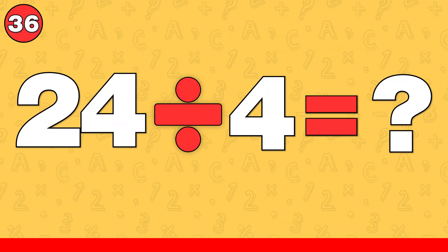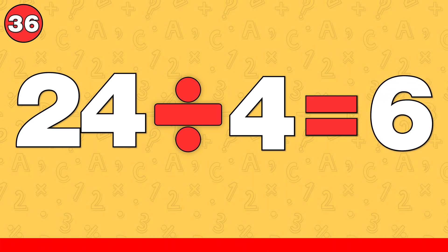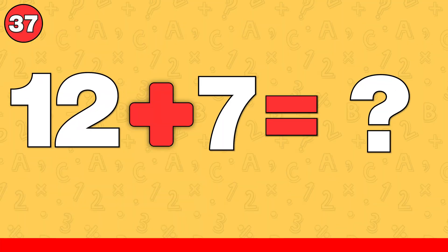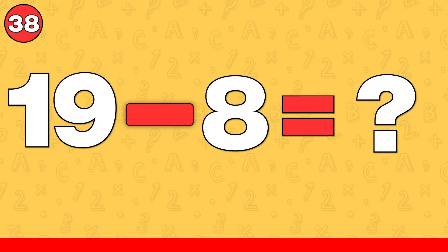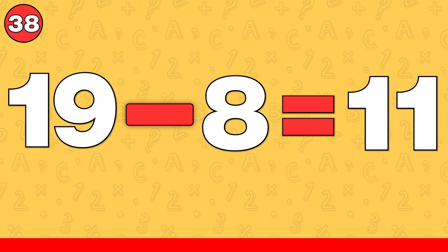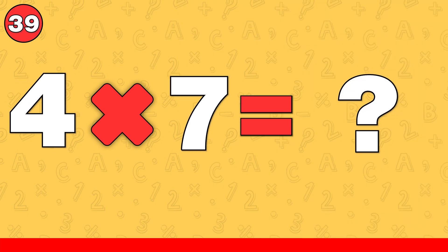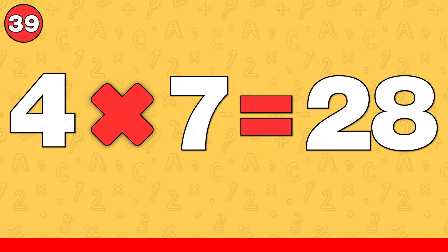24 divided by 4. The answer is 6. 12 plus 7. The answer is 19. 19 minus 8. The answer is 11. 4 times 7. The answer is 28.